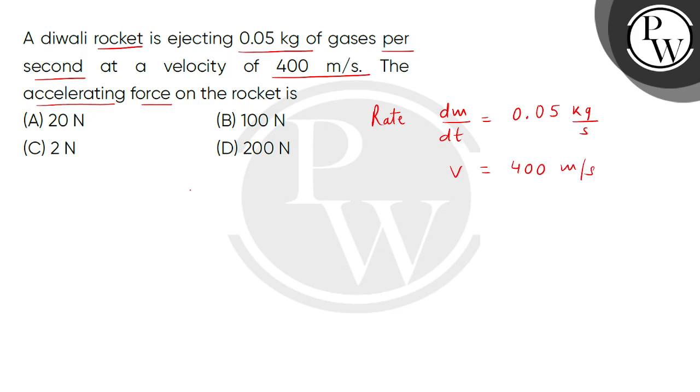We have to find the accelerating force on the rocket. We can take F = d/dt of mass multiplied by velocity. That will be the momentum. Here we will use the product rule of differentiation.